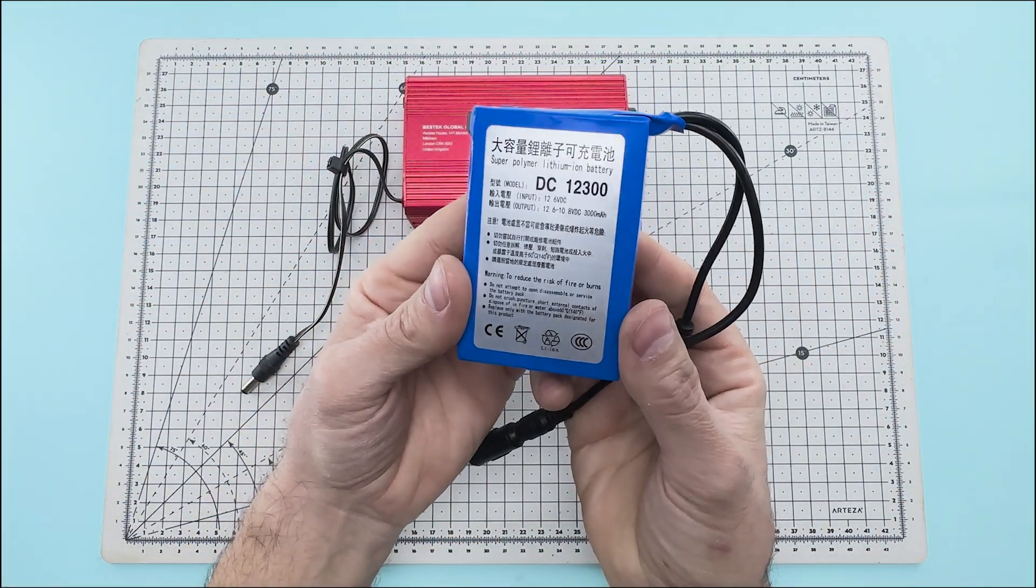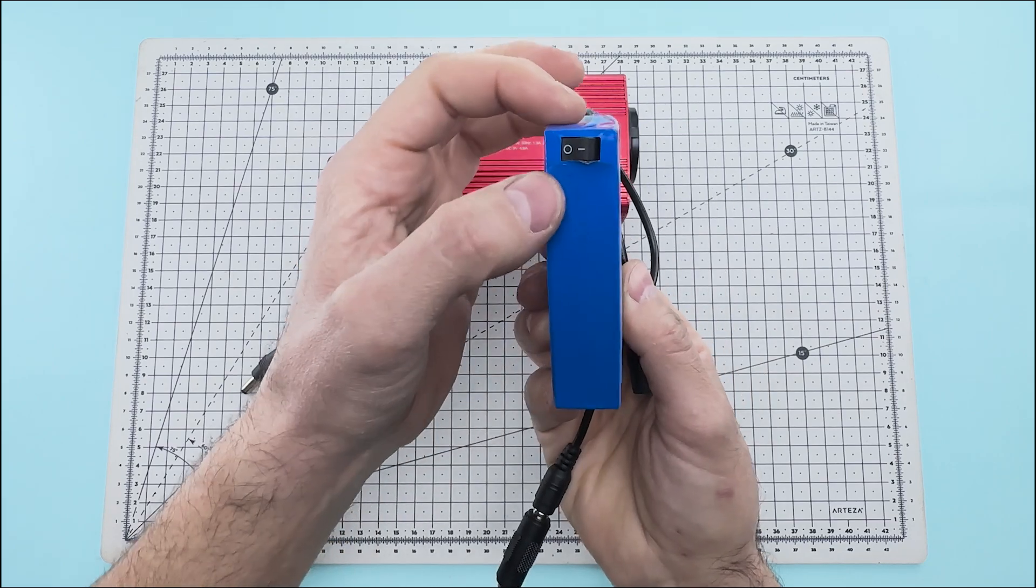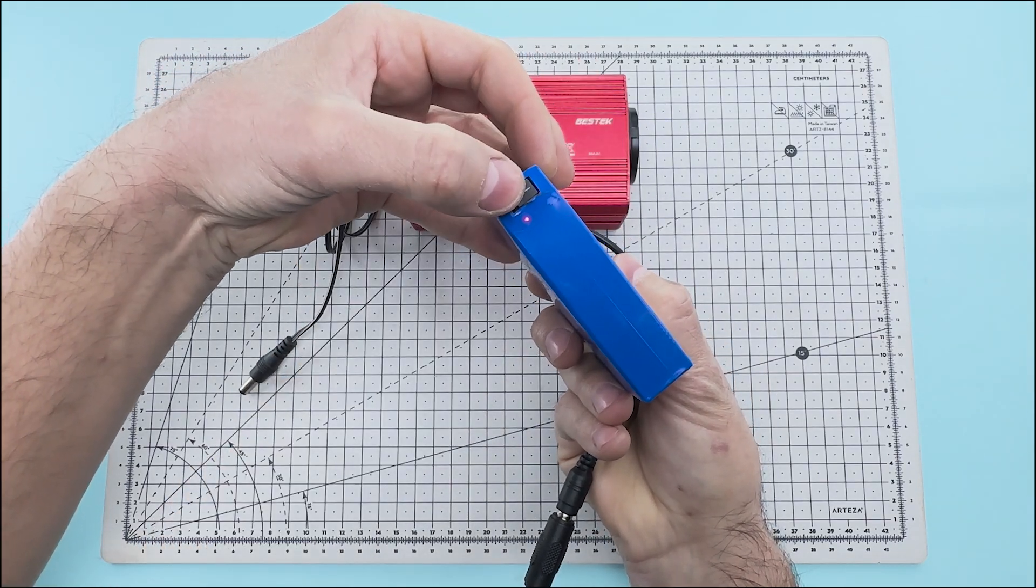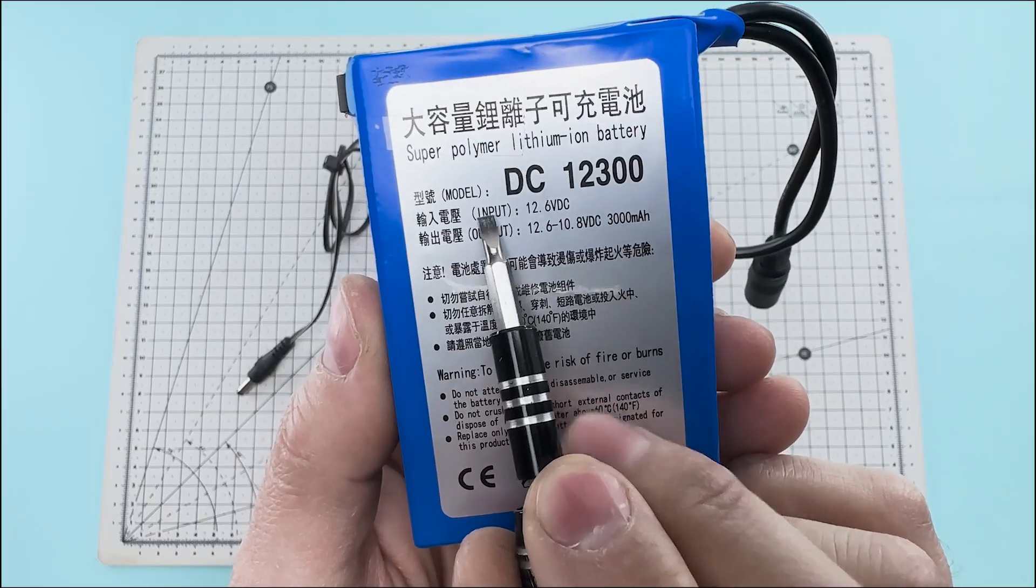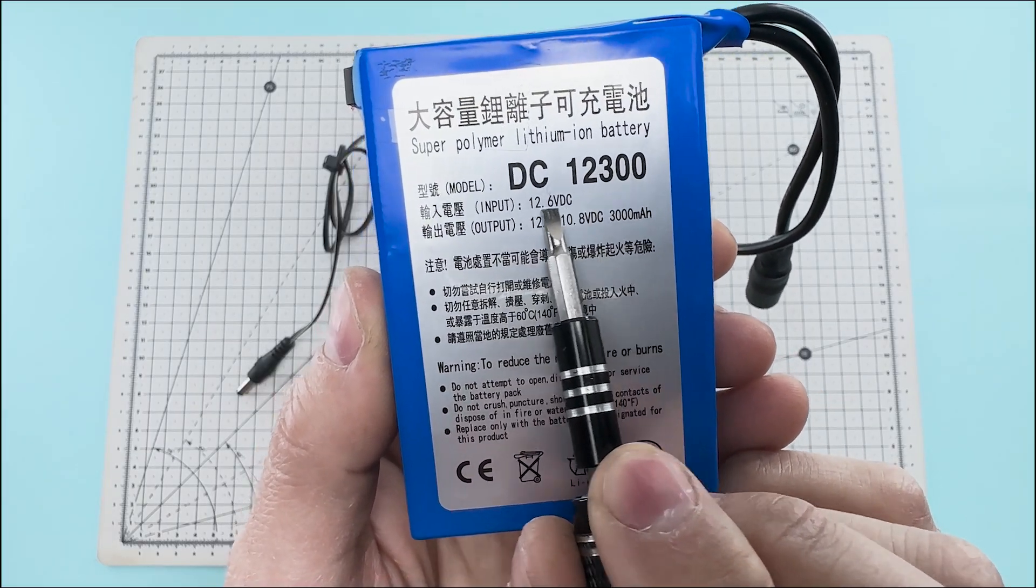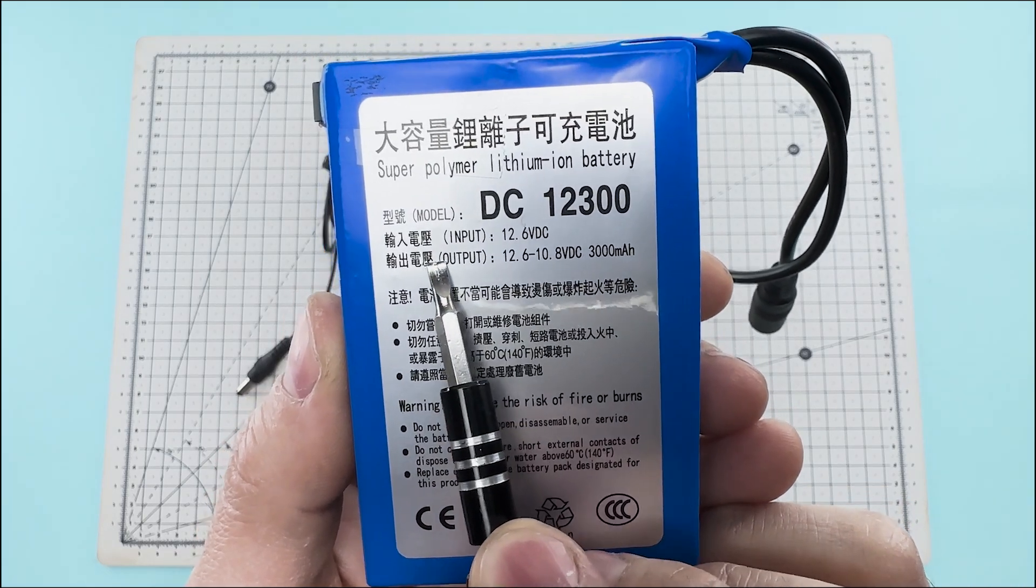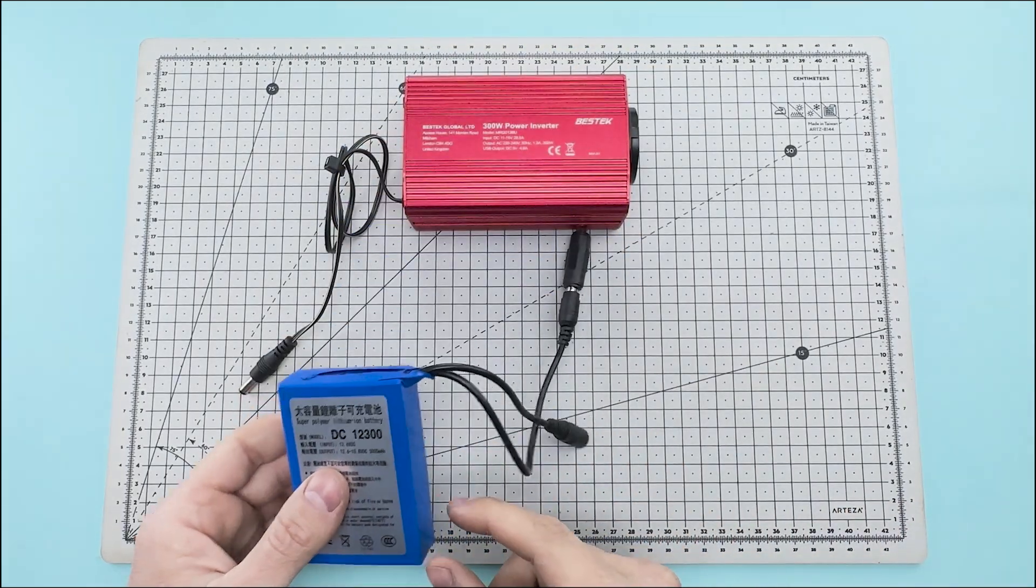We will also use a 12 volt direct current lithium battery. This battery has a switch to turn it on and off. The battery has a connector that accepts a charging voltage of 12.6 volts and it also has a connector that delivers a direct current of 12 volts.